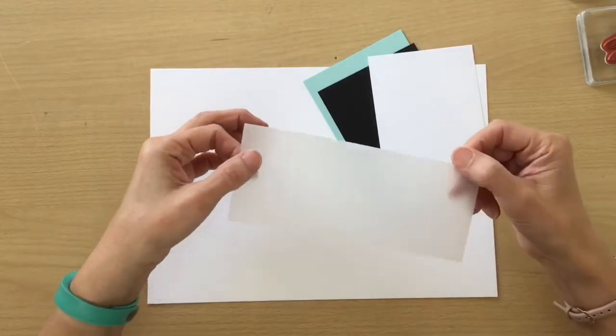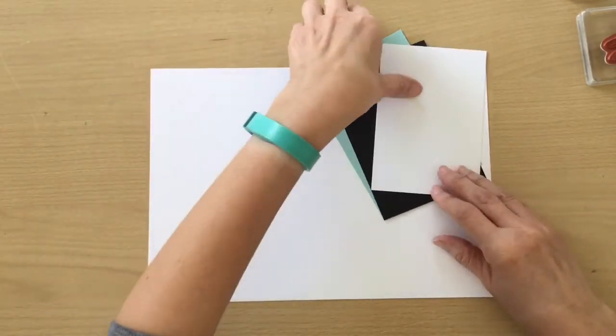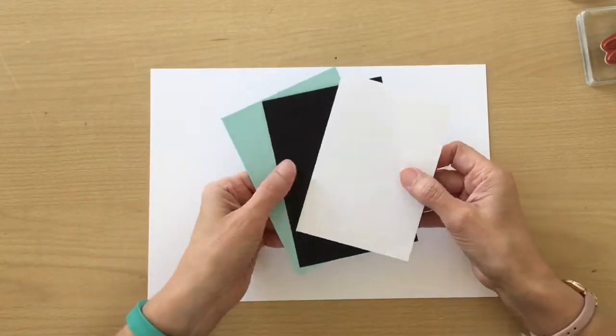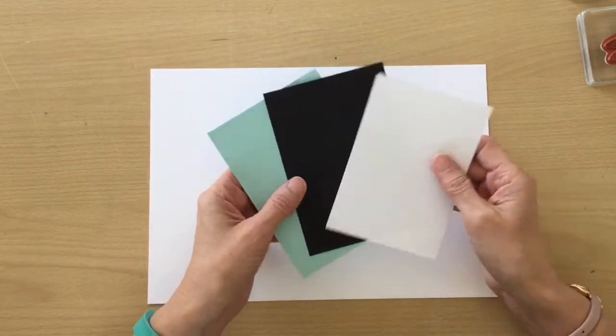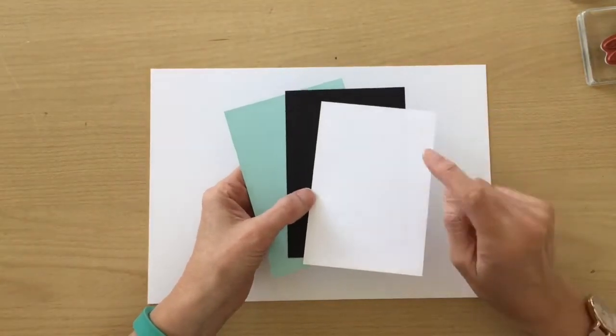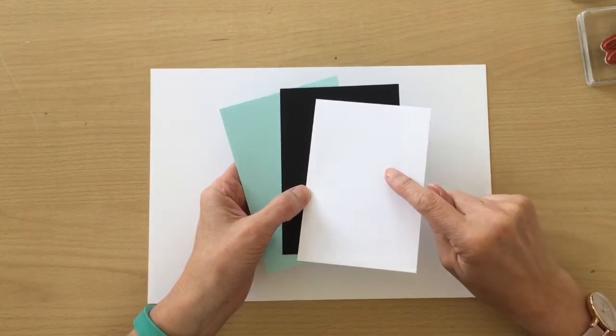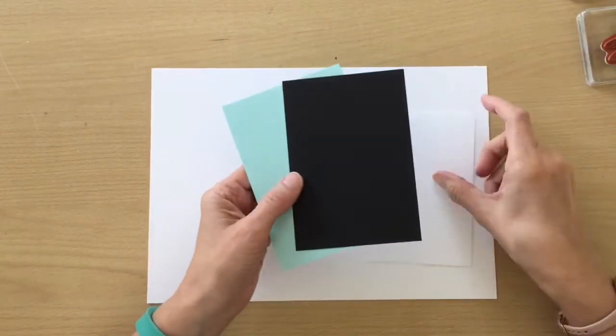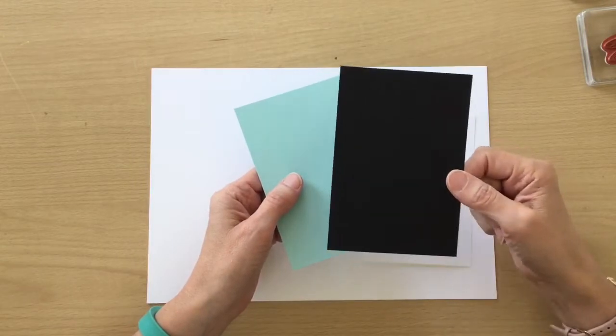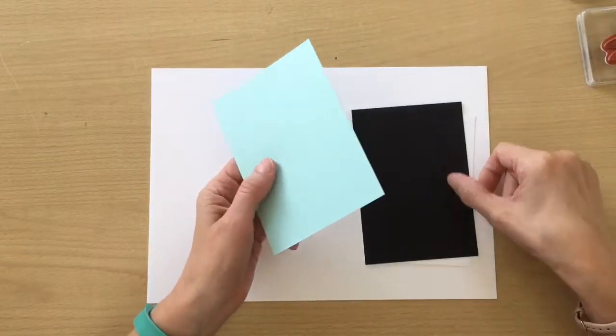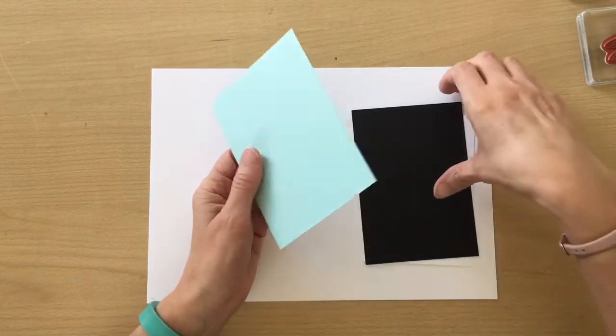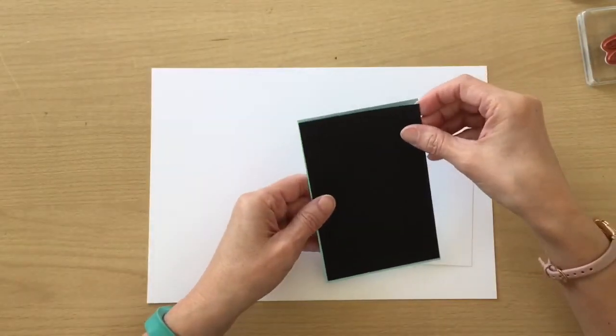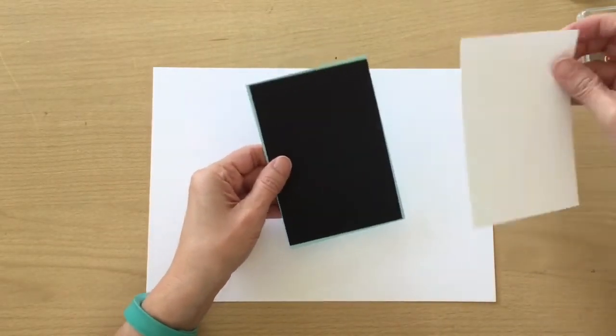We have a piece of vellum and I've already gone ahead and cut some pieces here. We have Pool Party, Basic Black, Basic White. The white is 9.5 by 13.7 centimeters, the black is 9.8 by 14 centimeters, and the Pool Party is 10.2 by 14.4. Basically we're just going to be layering these on top of each other. You can adjust these to however you want them to be.